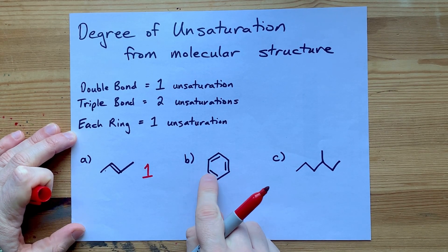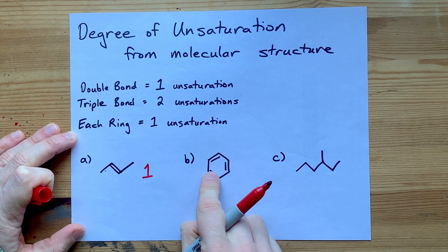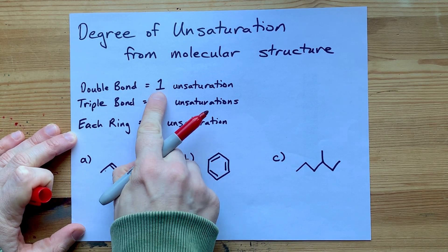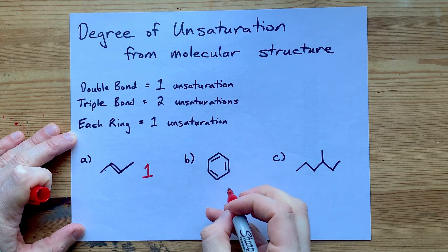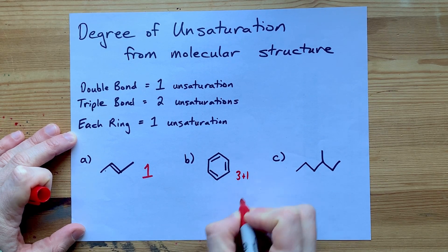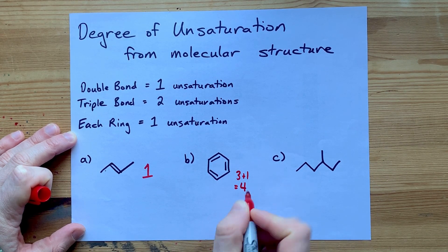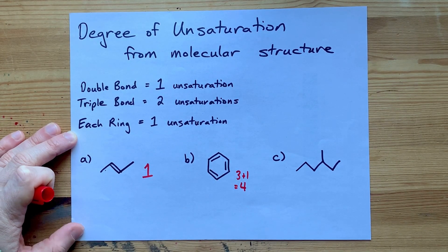In this molecule, we have one, two, three double bonds. Each of those contribute one. And we have a ring. That sounds to me like it's three for the double bonds and one for the ring, or an overall degree of unsaturation of four.